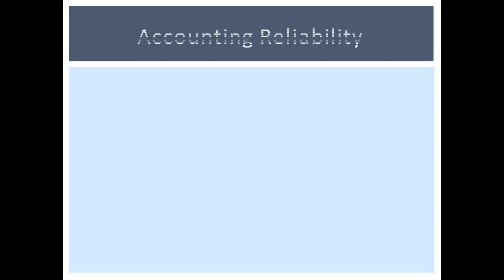Welcome to today's class continuation on accounting reliability. Reliability refers to whether financial information can be verified and used consistently by investors and creditors with the same result. It refers to the trustworthiness of a financial statement, because if decision makers cannot trust what is on the financial statement, financial reporting is useless. That is why the FASB is concerned with the reliability of financial statements.